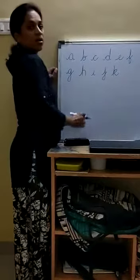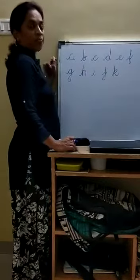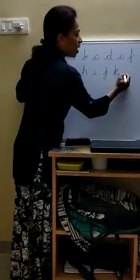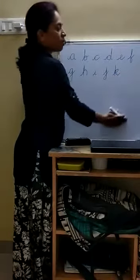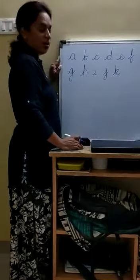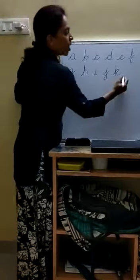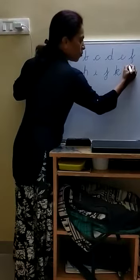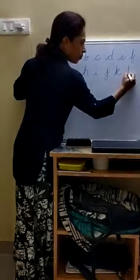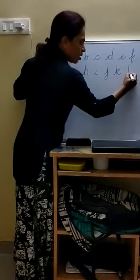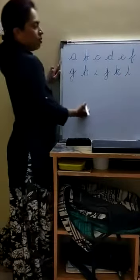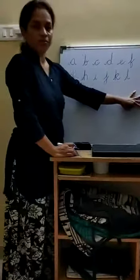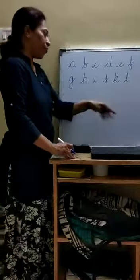After K, L. L says L. Name of the letter is L. Sound of the letter is L. How to write? Starting from the third line, go to the first line, come back with a little tail. L. Lion. L. Lamp.